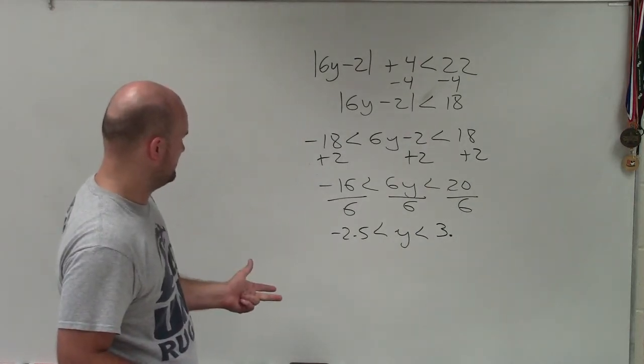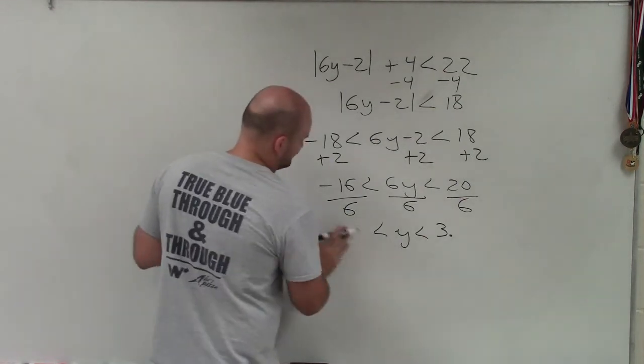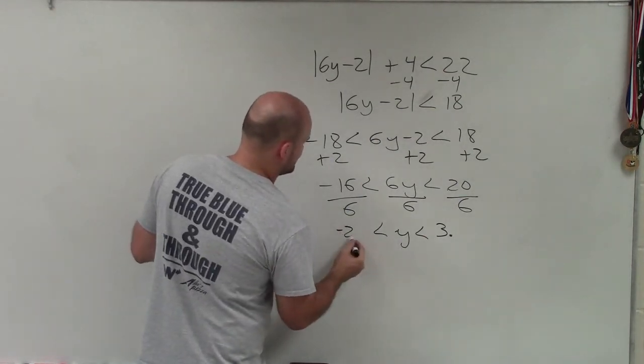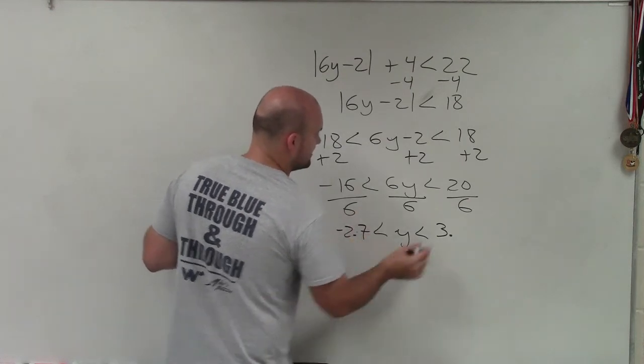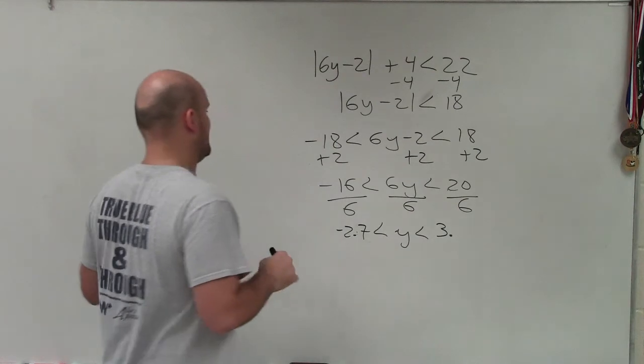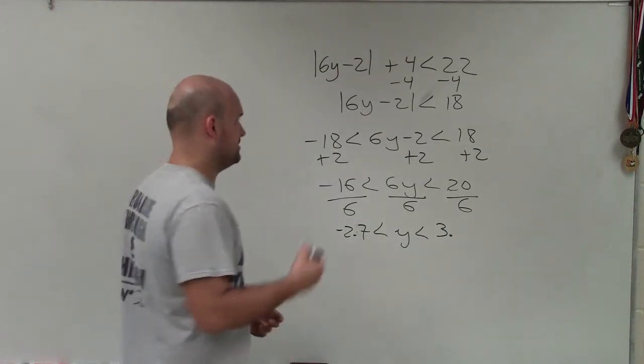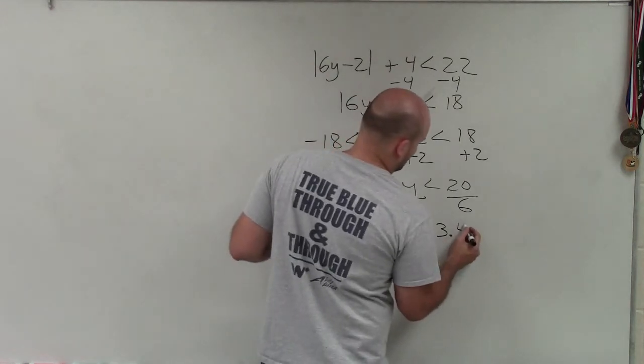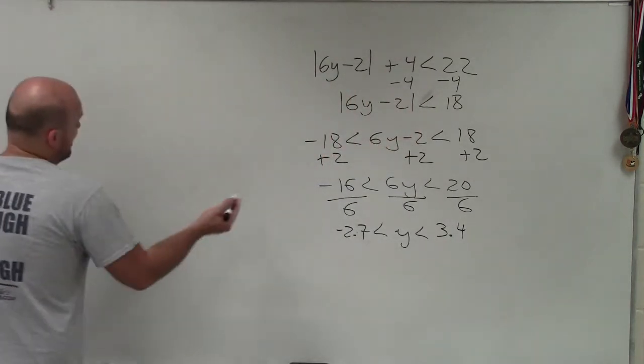Let me recalculate... So negative 2.6. Now let's round up to negative 2.7, and this would be a third, so that'd be 3.4. All right, again these are approximate. When graphing, well, I rounded them up actually because I want to kind of know where they're going to stand.